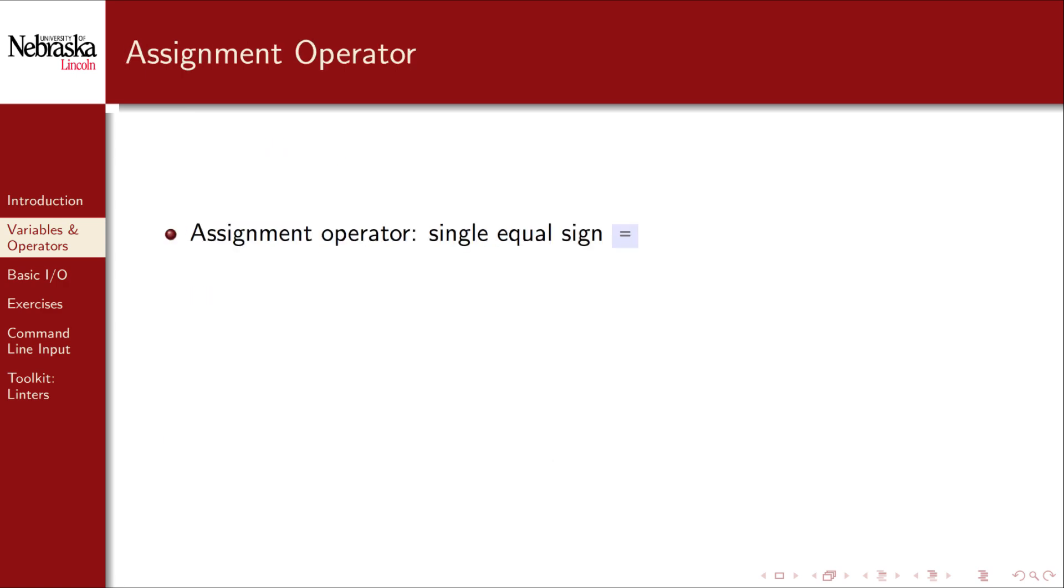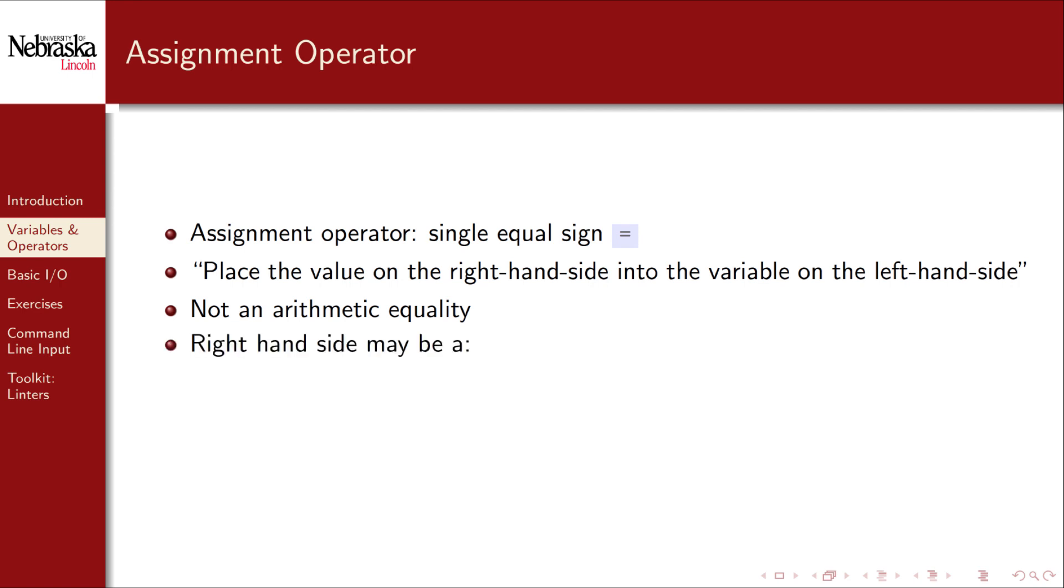Implicitly in our previous examples, we've been using the assignment operator, which is a single equals sign. It simply means place the value on the right hand side into the variable on the left hand side. Don't confuse this with the arithmetic equals sign, which means equality. In code we use something else to denote that. In general, the right hand side of the assignment operator can be a literal, which is a hard-coded numerical or character value, or it may be another variable, in which we're essentially copying one variable's value into another, or it may be an entire arithmetic expression. The left hand side, however, is always going to be a single variable.